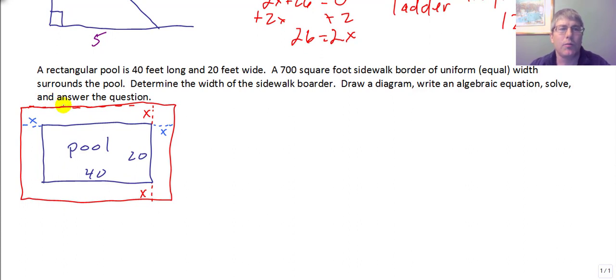A rectangular pool is 40 feet long and 20 feet wide. A 700 square foot sidewalk border of uniform or equal width surrounds the pool. I've got my pool here, my pool that's 40 by 20. And I've got this uniform border all the way around my pool. It's an equal width, the same width everywhere. But we don't know how wide it is.